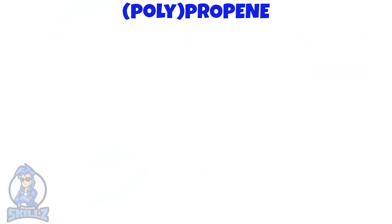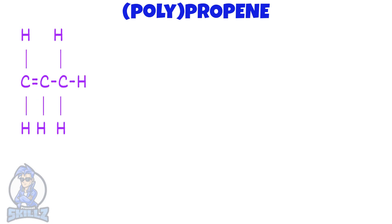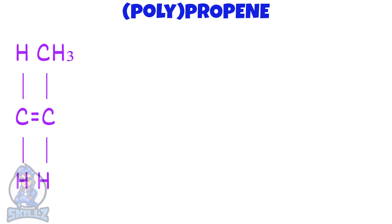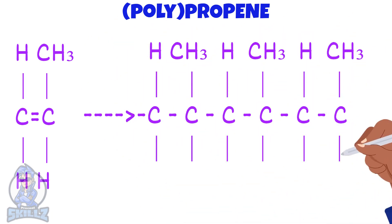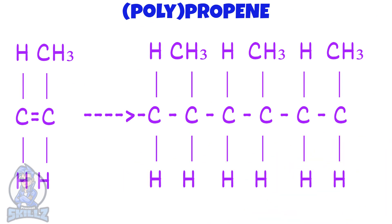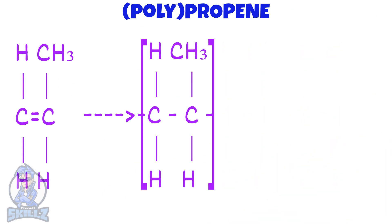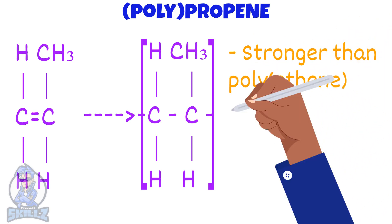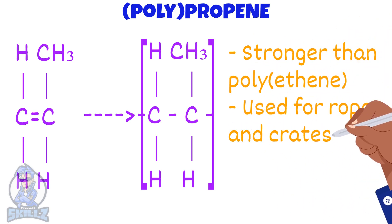Our next example is with the monomer propene. This is how propene is normally displayed, but to make it easier for us, we write it like this. A polymer of propene called polypropene will look like this. Here is the repeat unit for polypropene. Polypropene is stronger than polythene, so it can be used for ropes and crates.